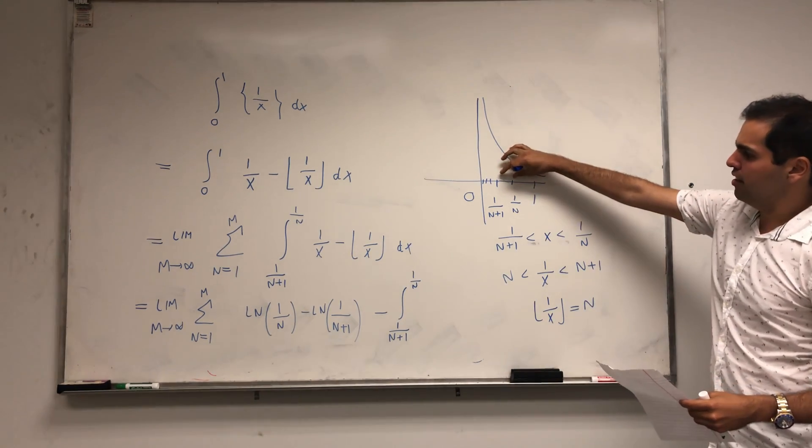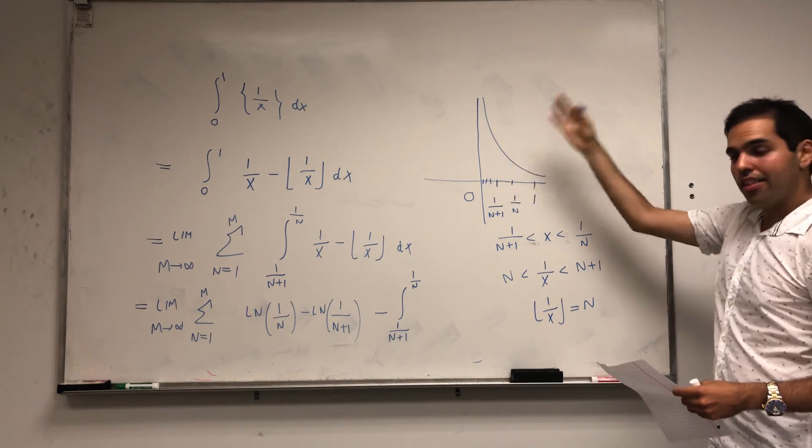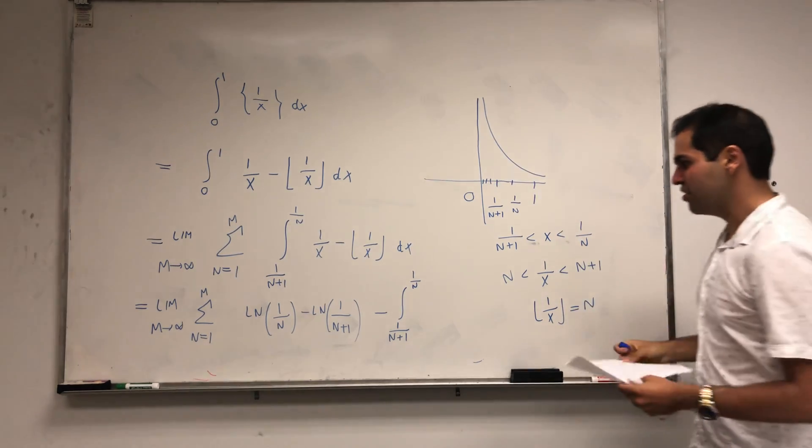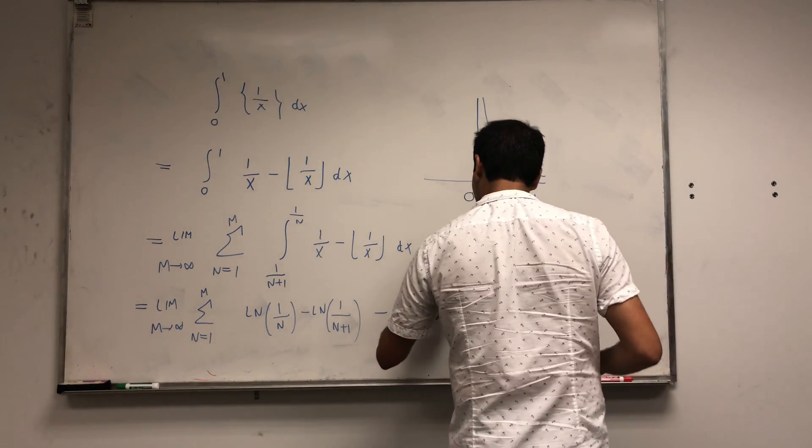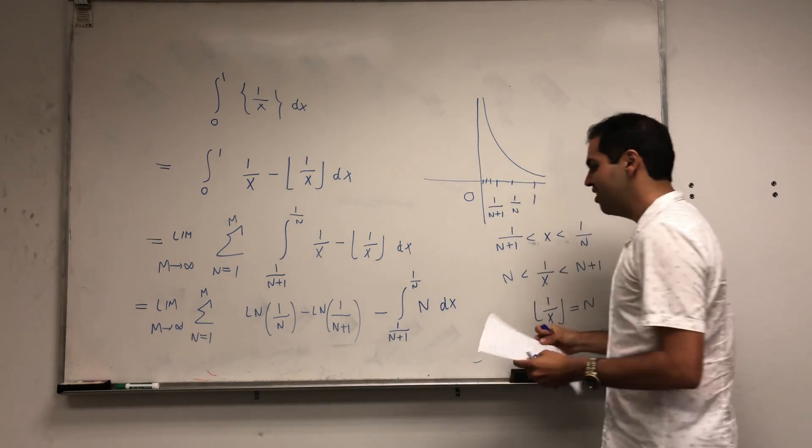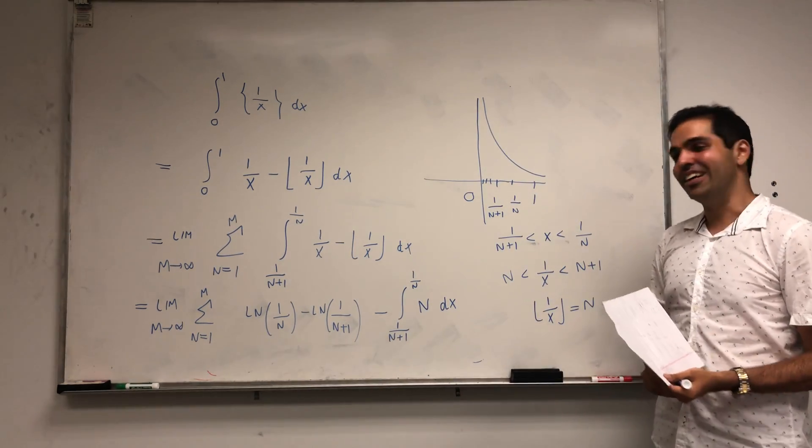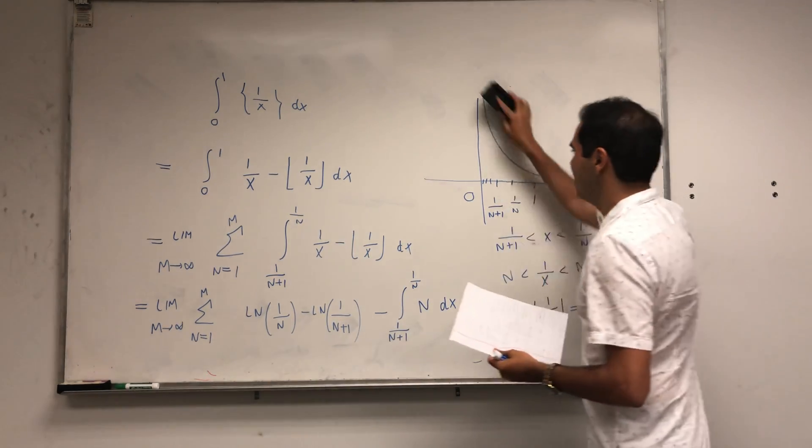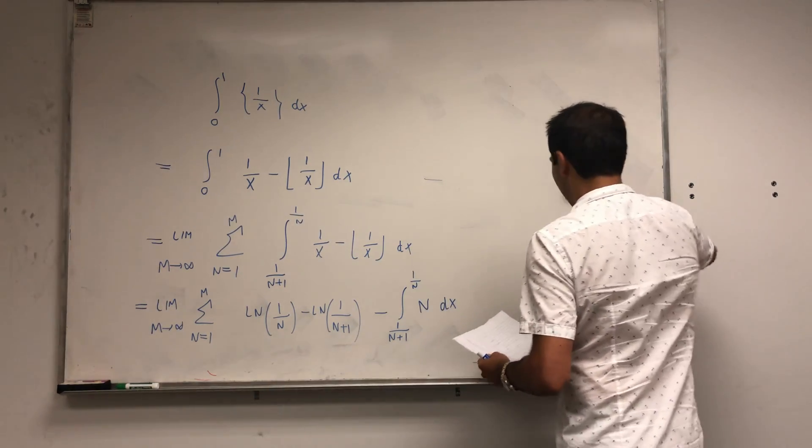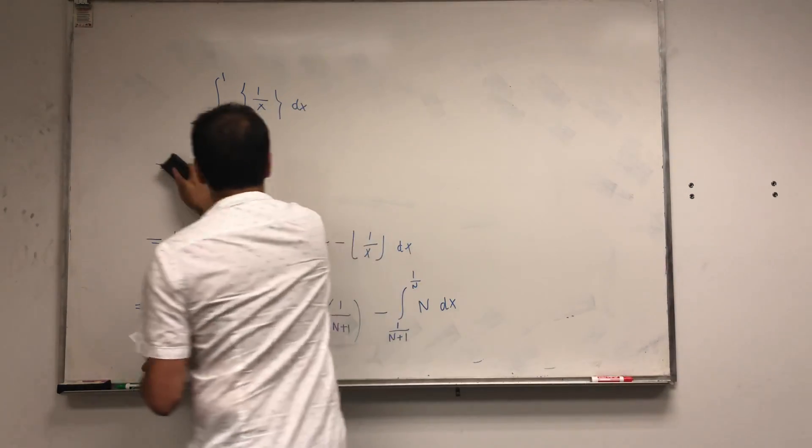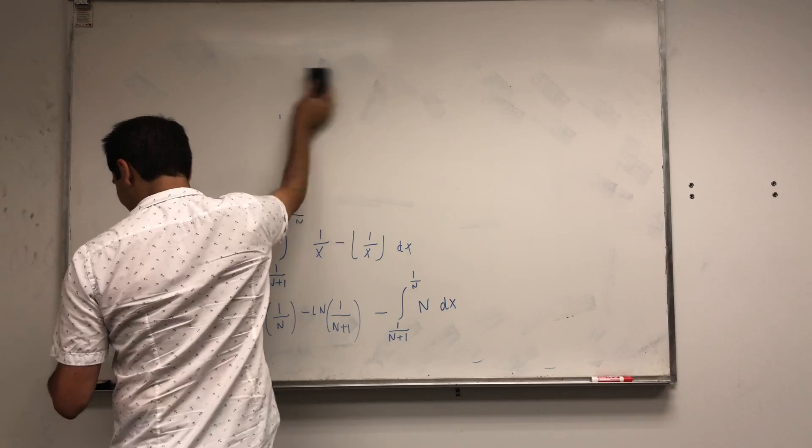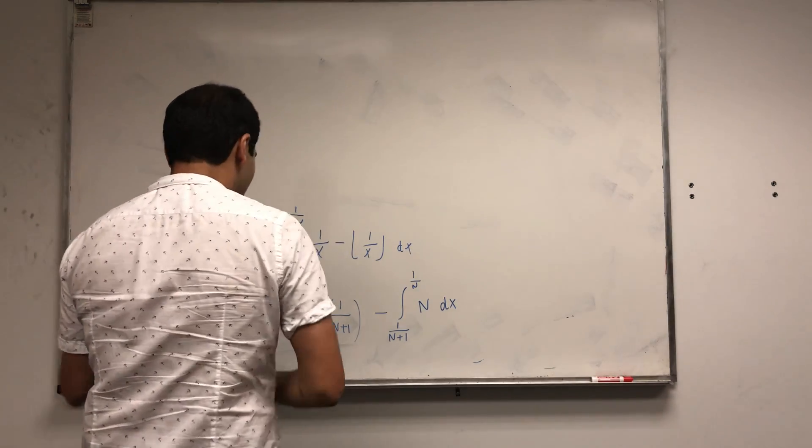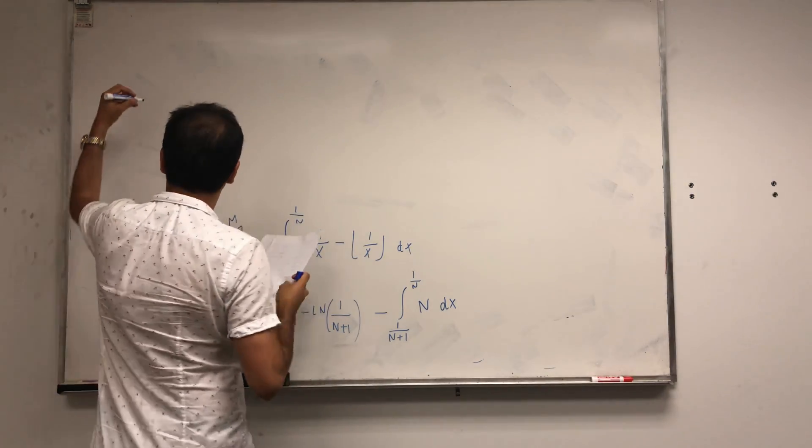Remember when you take reciprocals, you change the order. So in particular, because 1 over x is squeezed between those two integers, the floor of 1 over x is just n. So on those little chunks, this floor of 1 over x just becomes n, which is much easier to evaluate. You just get a constant.